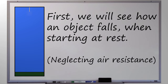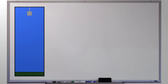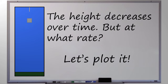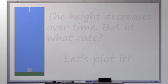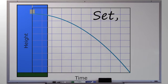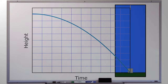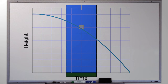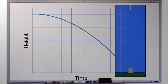When an object falls from some height at rest, its speed starts off at zero, but then increases, and so its height changes over time. Let's plot it. And it's a nice vertical drop, straight down the line, parabolic in time, very well done.